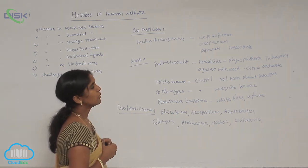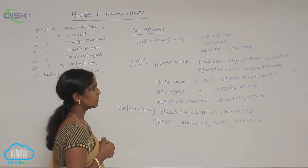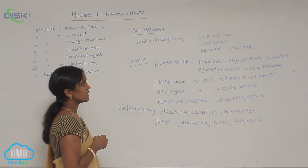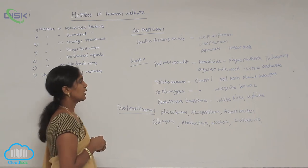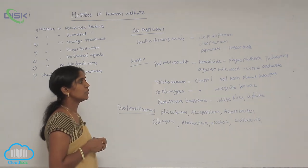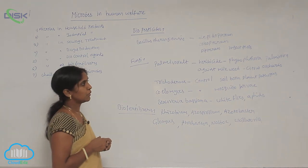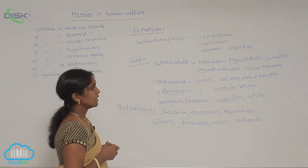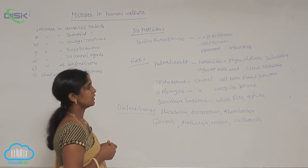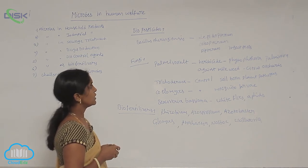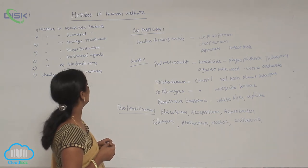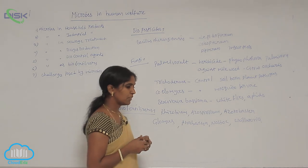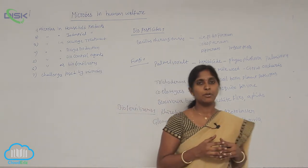Trichoderma is a fungus that controls soil-borne plant pathogens and also works against other microbial pathogens. Culicinomyces can control mosquito larvae, and Beauveria bassiana works against whiteflies and aphids. These are effective biocontrol agents.